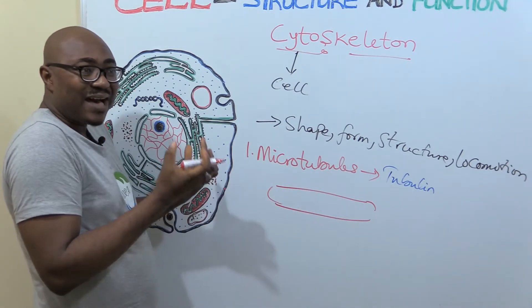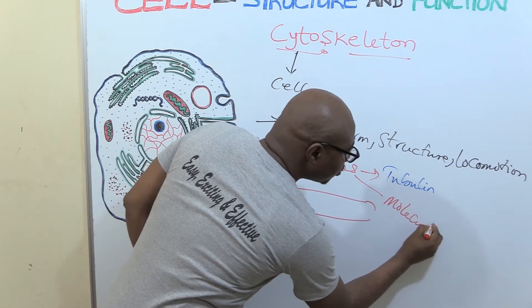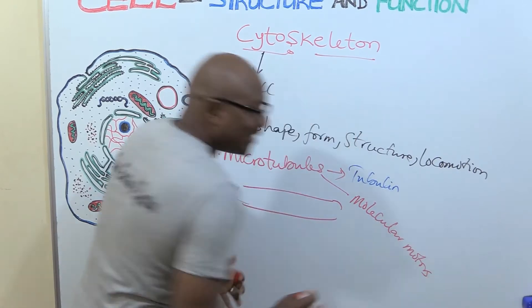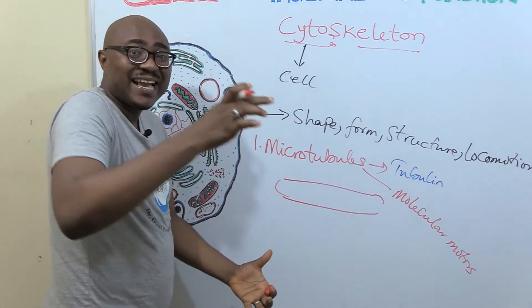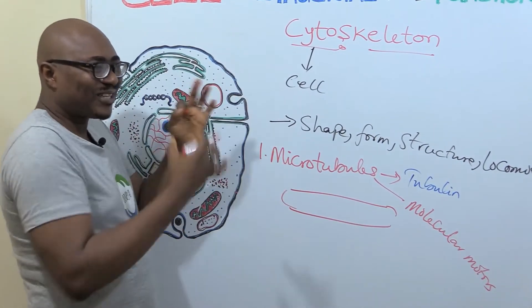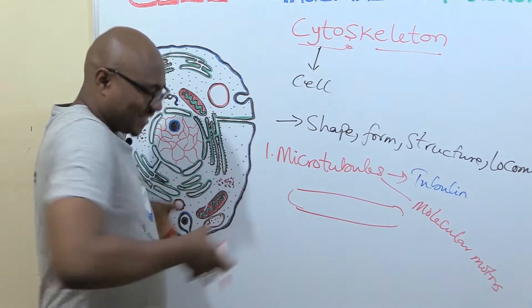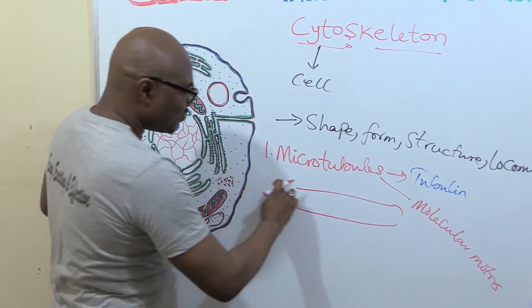Then they now have what we call molecular motors. Molecular motors that now function as the train that carries a cargo, a load. So those molecular motors, they carry whatever substances that need to be transported, and the microtubule is now the track. I hope you're getting it, the track that it uses to move.